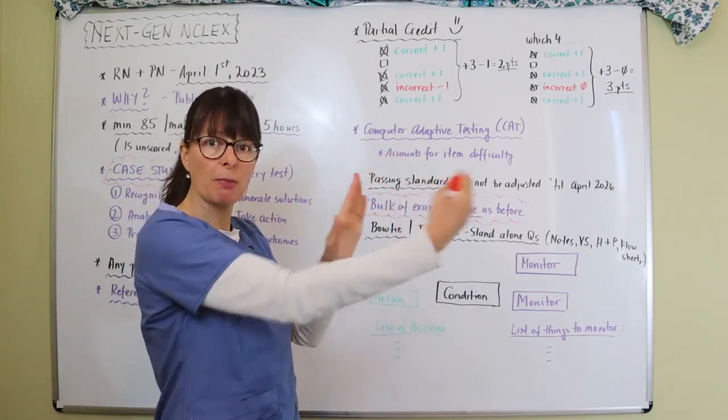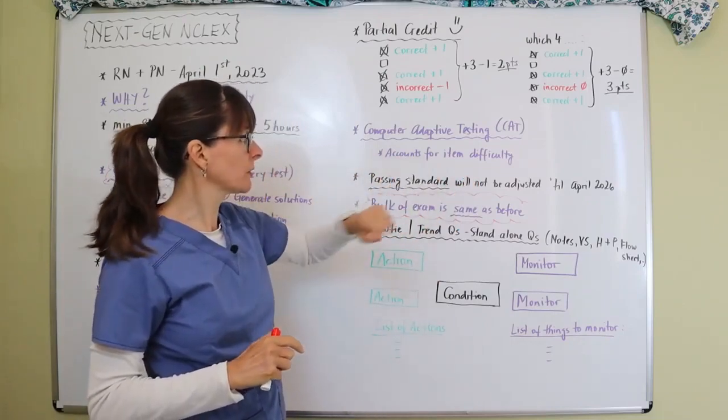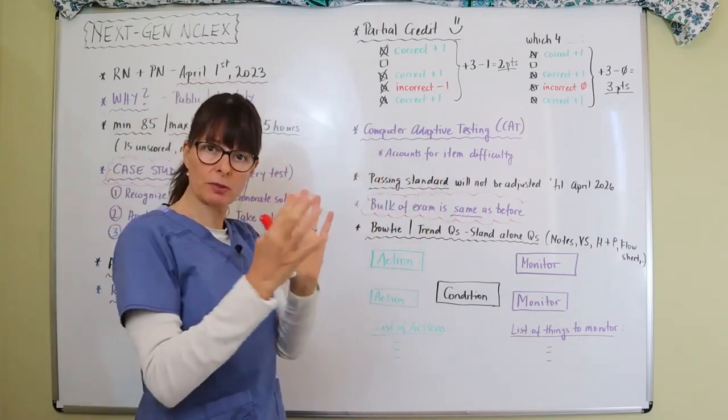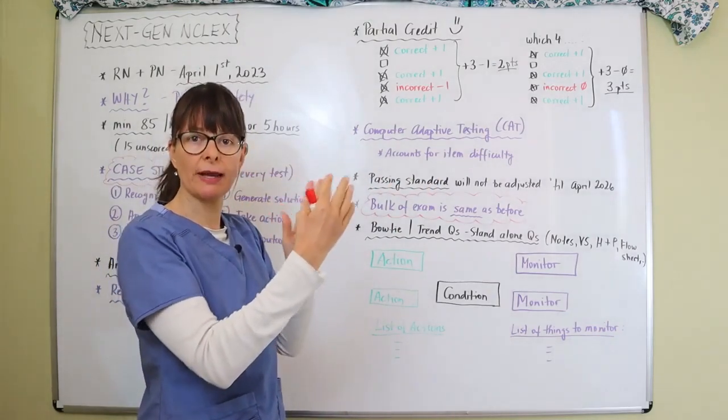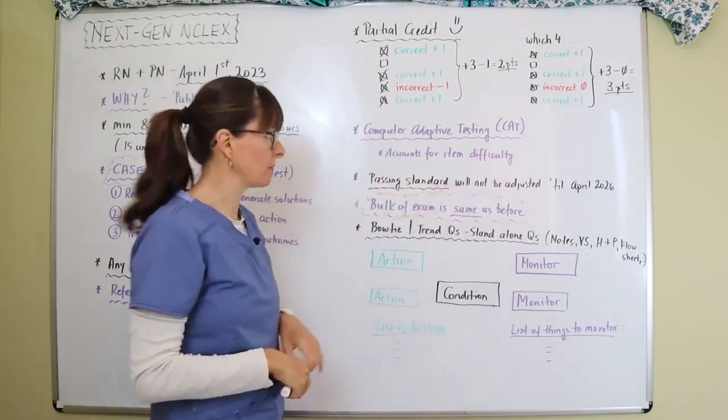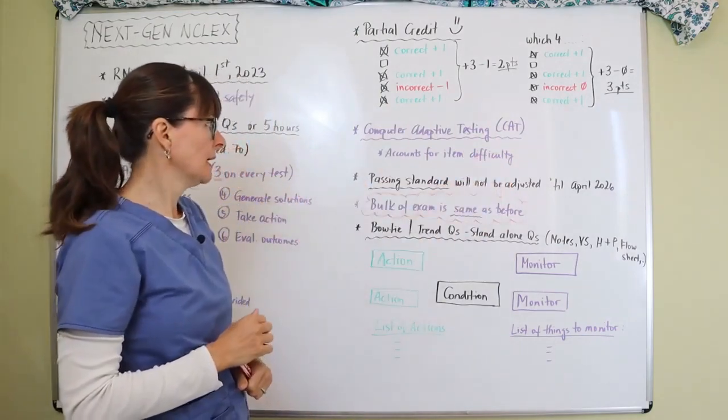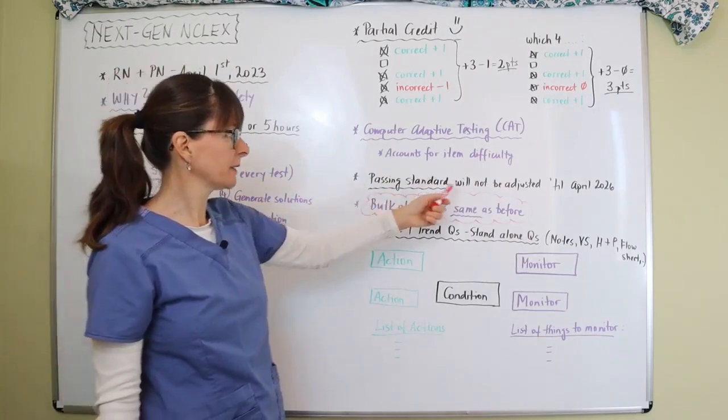They're going to move you over on that line that tells you passing or not passing. This accounts for the item difficulty. So the easier items are going to be scored more on the closer to the pass-fail line, but the difficult items are going to be more on the passing side of things.